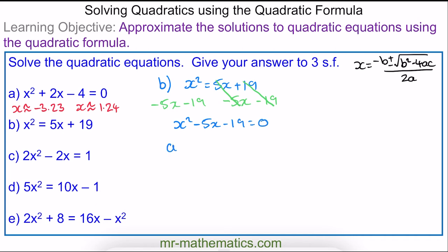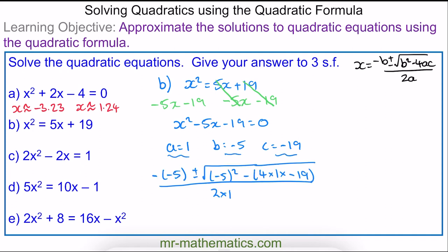We can see that a = 1, b = −5, and c = −19. Now we substitute these three values into our formula and simplify. So x = (5 ± √101) / 2, giving approximate solutions of x ≈ −2.52 and x ≈ 7.52.